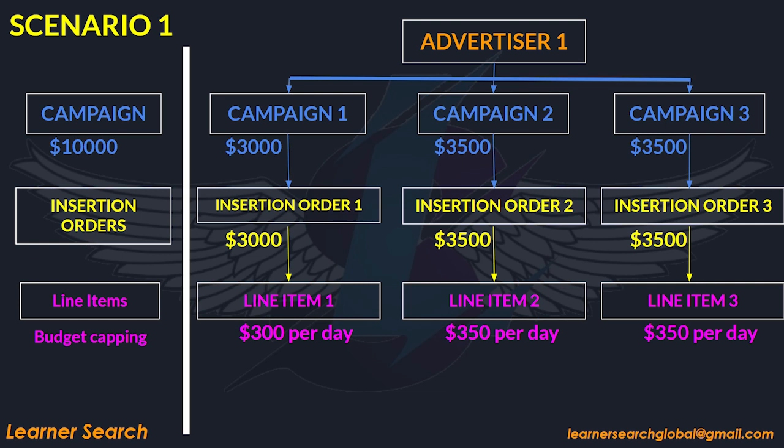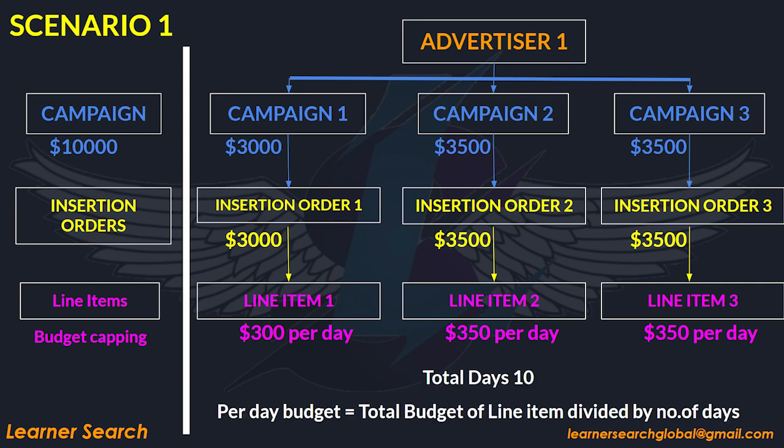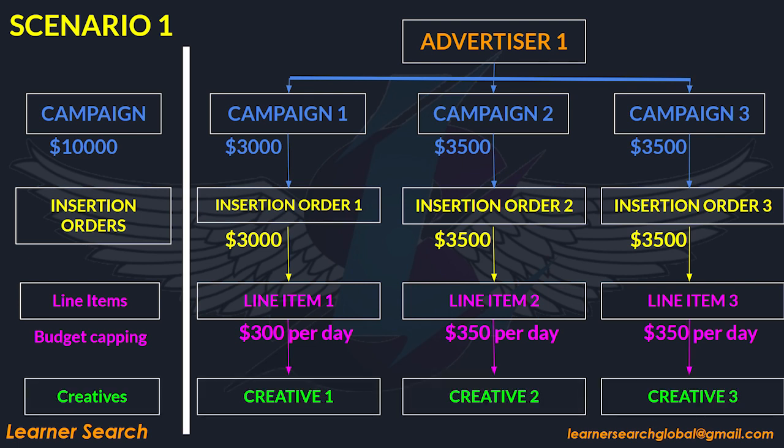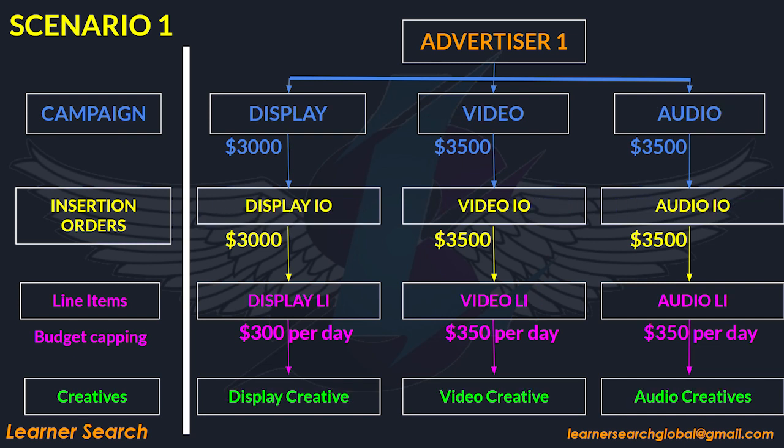Here, we have given a daily budget for each line item. To calculate daily budget: total budget divided by total campaign flight days. Daily budget for each line item is as shown in the figure. Finally, creatives are assigned to the respective line items. In this scenario, campaign 1 is for display, campaign 2 is for video, and campaign 3 is for audio, and the hierarchy objects follow for each campaign.